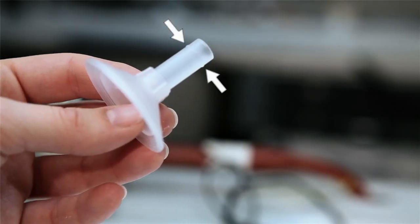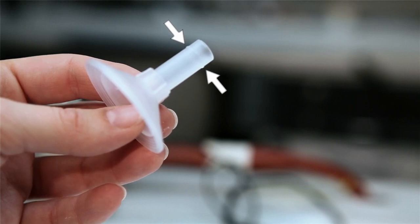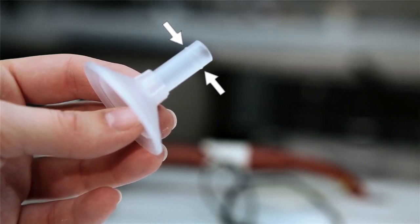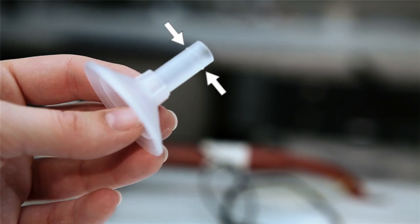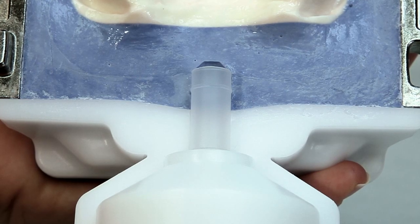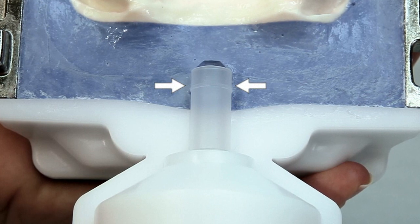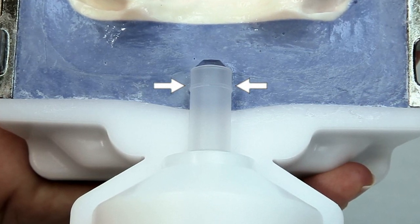During injection, the sealing lip of the funnel is used to seal the hollow space in the flask in the injection direction. Therefore, the funnel must be completely embedded in stone to prevent the resin from escaping the flask.